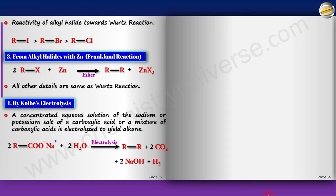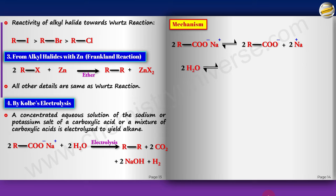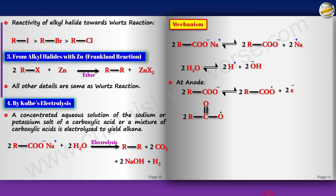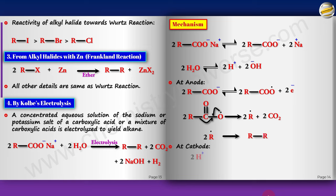The mechanism of Kolbe's electrolysis: sodium carboxylate dissociates into RCOO⁻ and Na⁺; water dissociates into H⁺ and OH⁻. At the anode, the carboxylate ion loses an electron to form a carboxylate radical (RCOO•). This radical disproportionates: the R–C bond breaks, releasing two R• radicals and CO₂. The two R• radicals combine to give R–R. At the cathode, H⁺ is reduced to H₂ gas; OH⁻ reacts with Na⁺ to form NaOH.